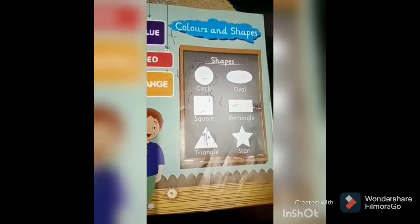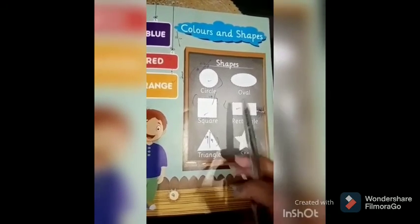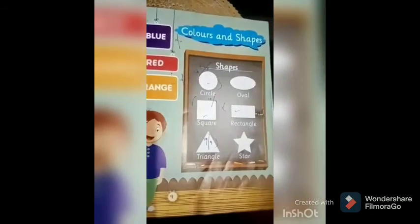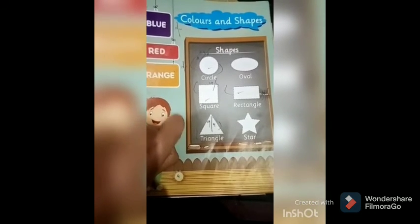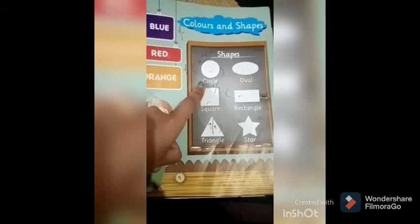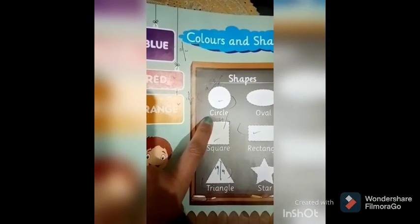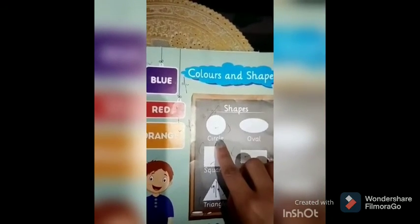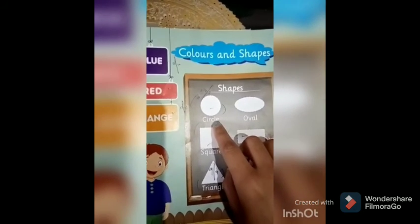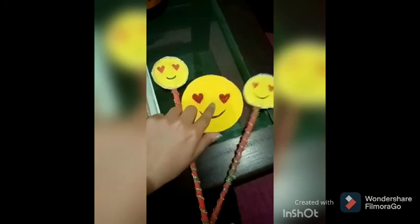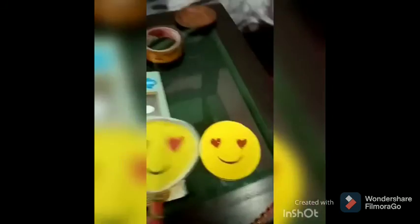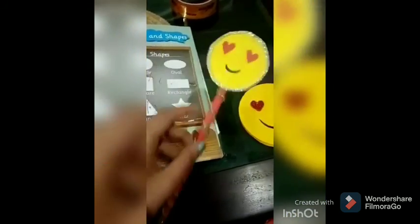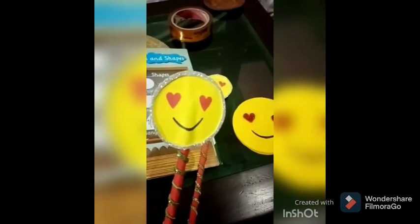Today our topic is shape. Please parents, mention today's date. Students, do you know which shape is this? Yes, this is circle shape. Repeat with me, this is circle shape. Is this circle, students? Yes, this is circle. Very good. This is also in circle shape.